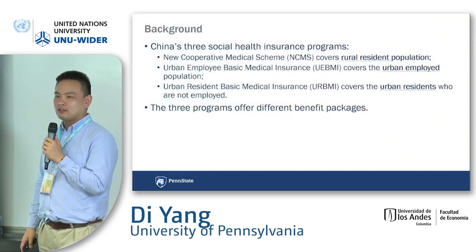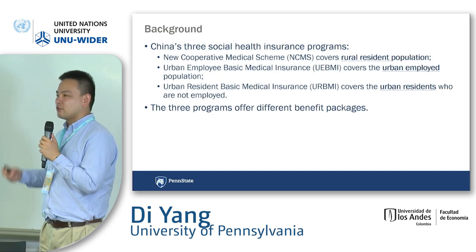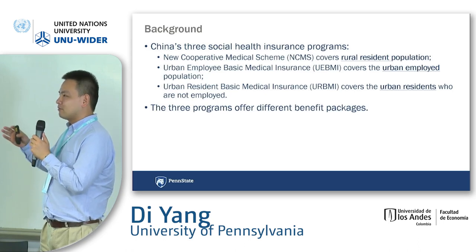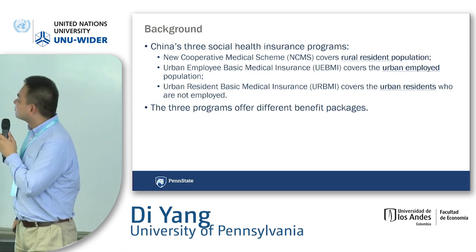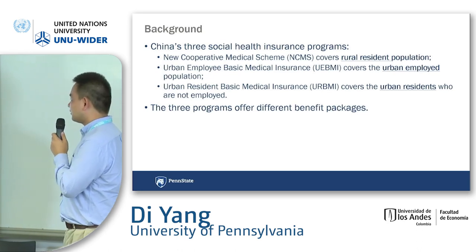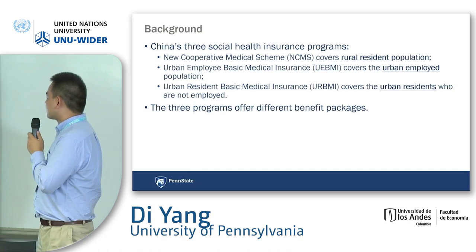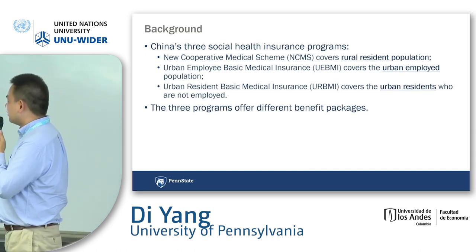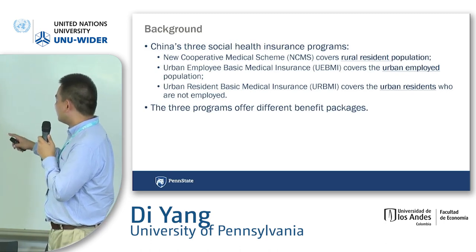Let me give you some background information about the social health insurance programs in China. There are three major programs, and the Chinese government divided the population into three subgroups. The NCMS, the New Cooperative Medical Scheme, is for rural residents. UEBMI, the Urban Employee Basic Medical Insurance, covers the urban employed population. And URBMI, the Urban Resident Basic Medical Insurance, covers urban residents.